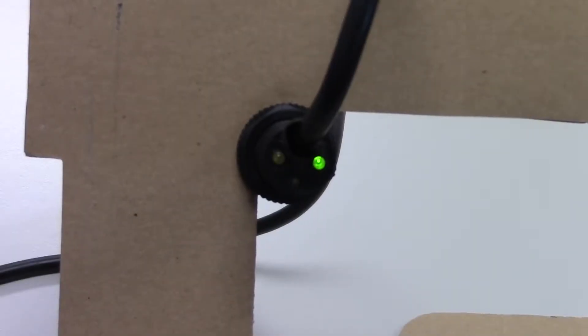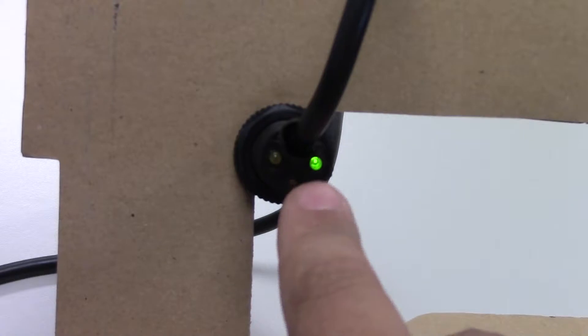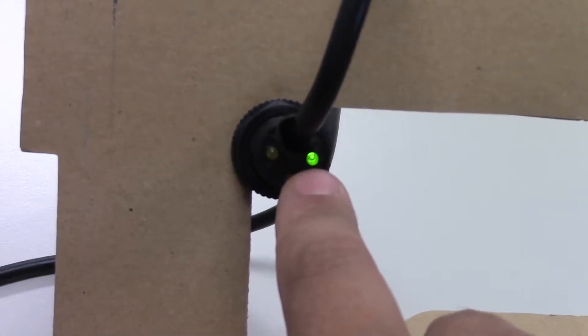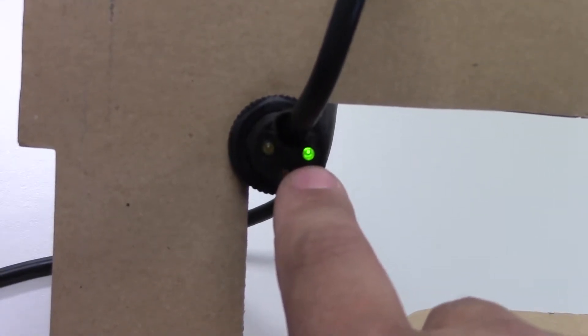First we're going to take a look at the prox sensor. On the prox sensor there are two lights. The first one here that is lit up green is our power light. If this is lit up that means the prox sensor has power.